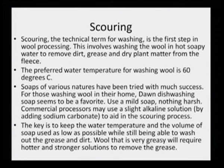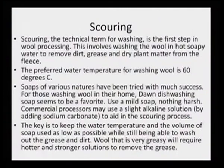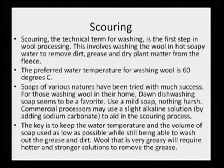Commercial processors may use a slightly alkaline solution by adding sodium carbonate to aid the scouring process. The best material is a slightly alkaline soapy solution so that it can wash very well, and this scouring step is very important to remove the dirt and the grease. The key is to keep the water temperature and the volume of soap used as low as possible while still being able to wash out the grease and the dirt. Wool that is very greasy will require a hotter and stronger solution. The optimal temperature is 60 degrees and a very low concentration of soap must be used.